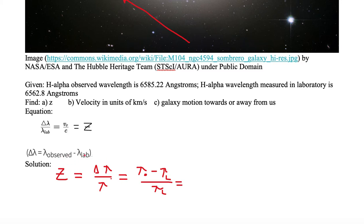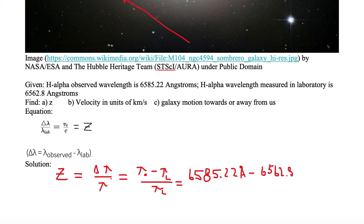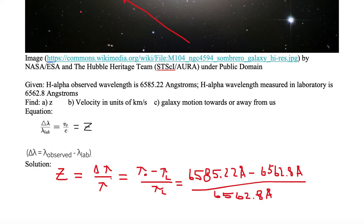Z equals lambda observed minus lambda lab, divided by lambda lab. Lambda observed is 6585.22 angstroms. We subtract off the lab value of 6562.8 angstroms, and divide by 6562.8 angstroms — the same wavelength value measured in the lab.